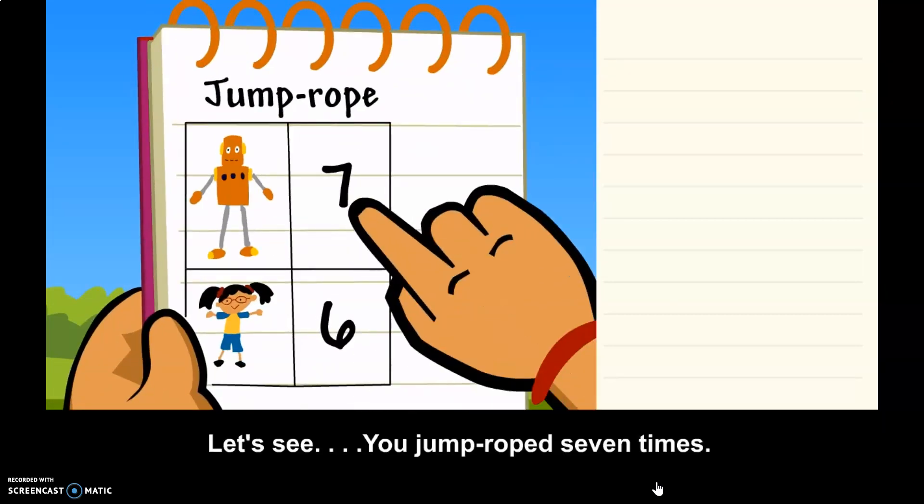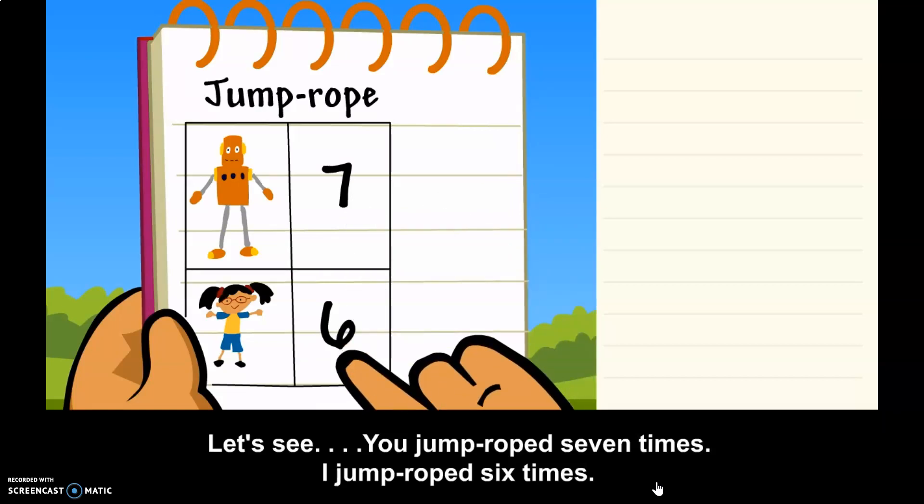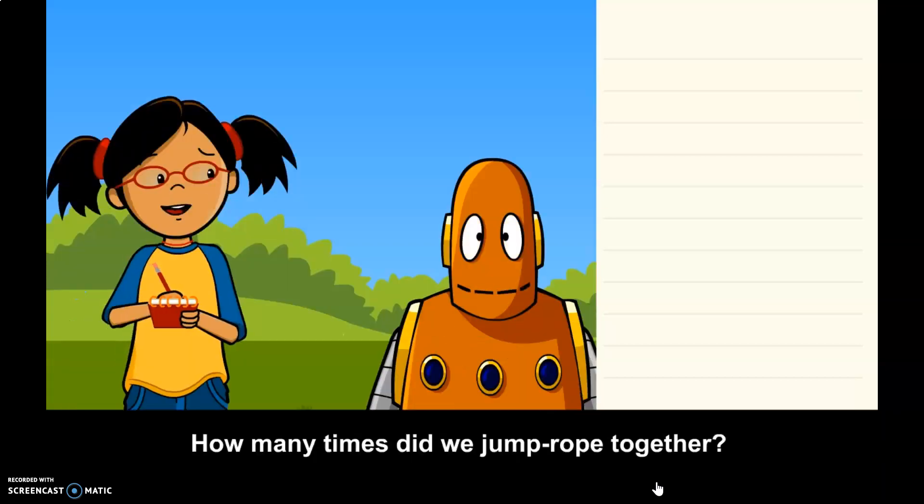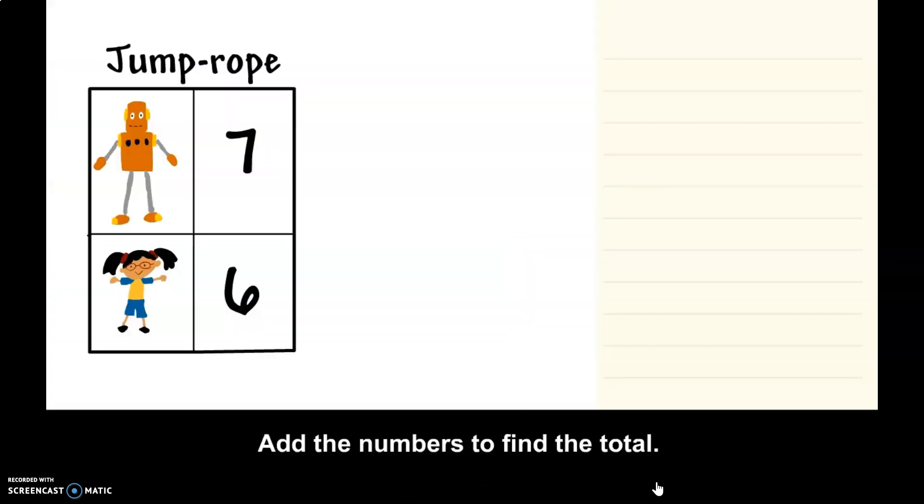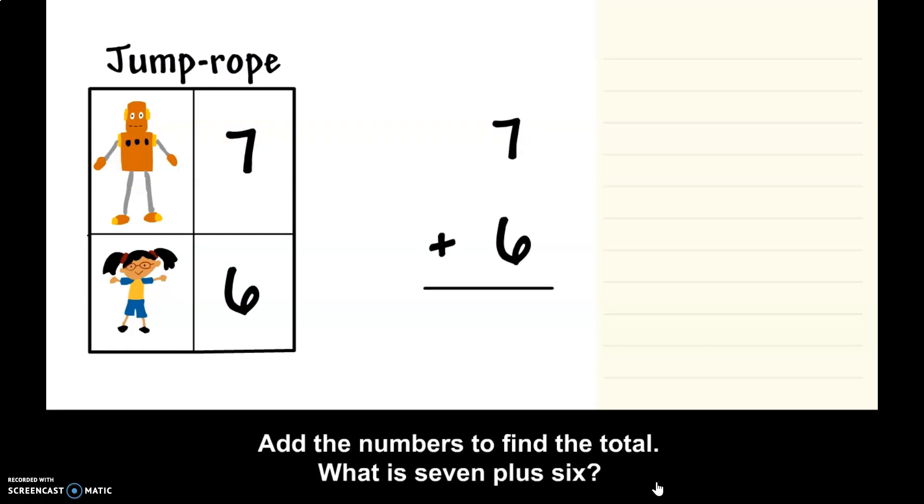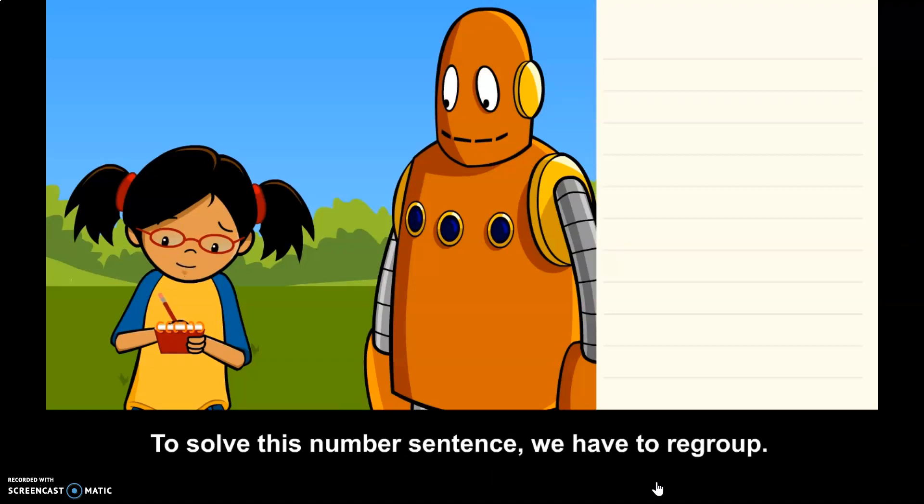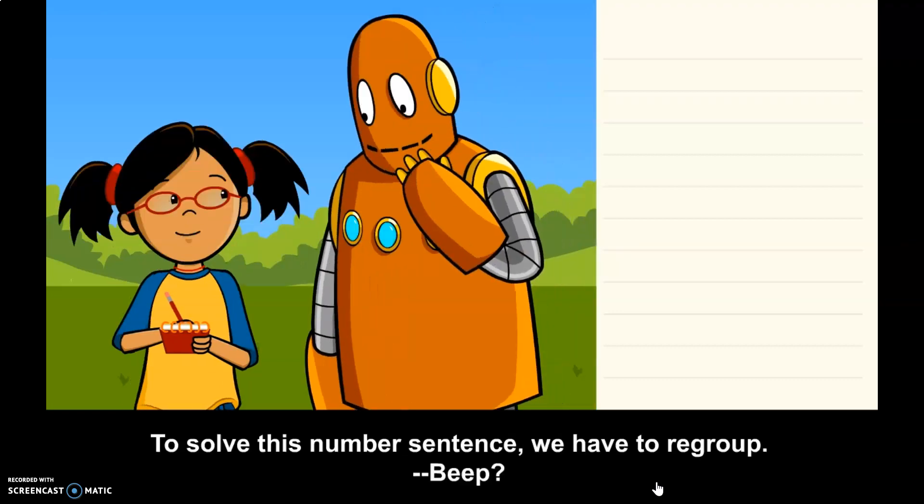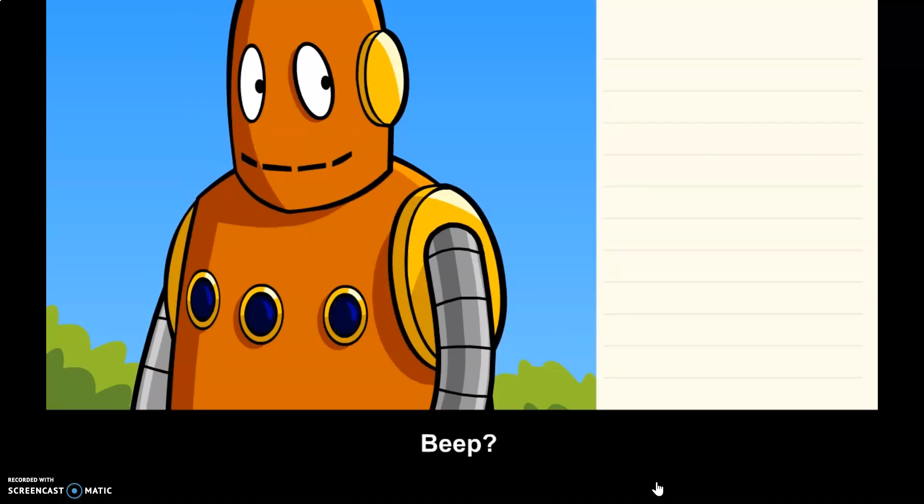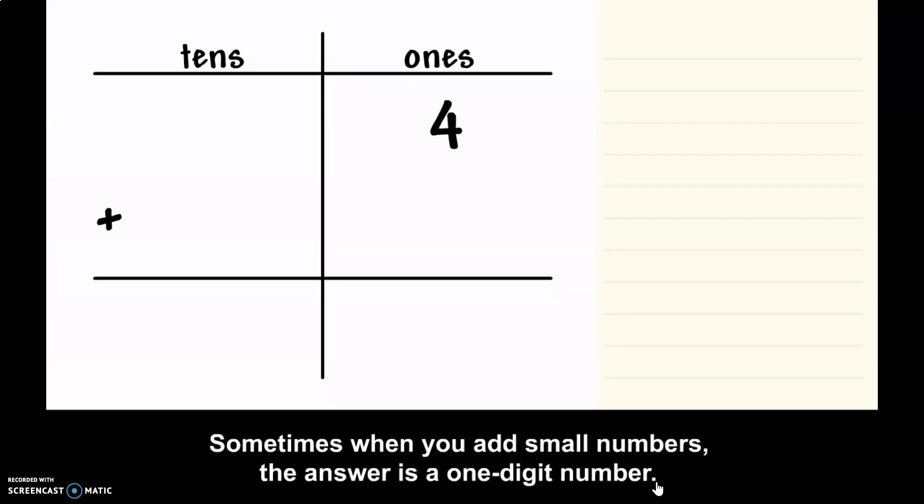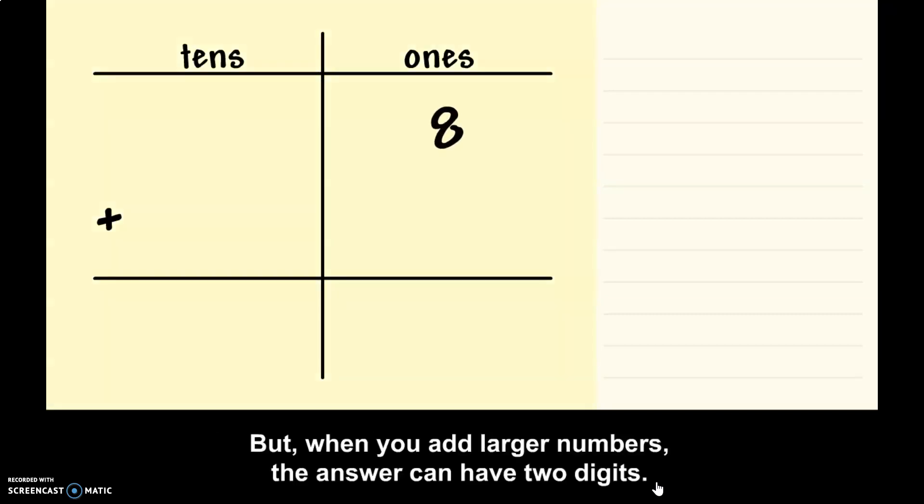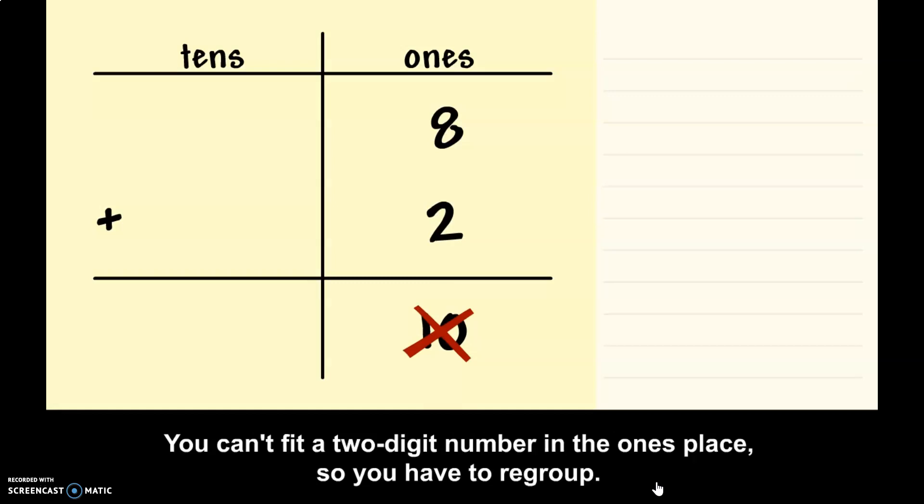Let's see. You jump roped seven times. I jump roped six times. How many times did we jump rope together? Add the numbers to find the total. What is 7 plus 6? To solve this number sentence, we have to regroup. Sometimes when you add small numbers, the answer is a one-digit number. But when you add larger numbers, the answer can have two digits. You can't fit a two-digit number in the ones place, so you have to regroup.